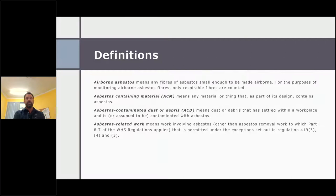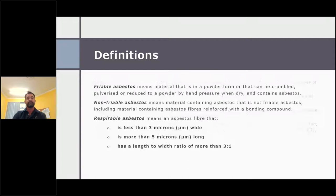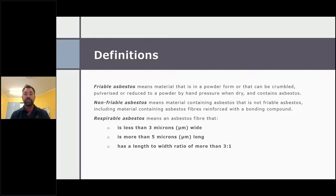Some definitions: Airborne asbestos is any fibre of asbestos small enough to be made airborne — for monitoring purposes we only count the respirable ones. Asbestos containing material is any material that as part of its design contains asbestos. Asbestos contaminated dust or debris means any dust or debris settled within a workplace that is or is assumed to be contaminated with asbestos. Asbestos related work means any work involving asbestos other than removal. Friable asbestos is any material in a powder form that can be crumbled or pulverised by hand pressure alone and contains asbestos. Non-friable asbestos is the bonded variety with a bonding compound. Respirable asbestos is any asbestos fibre less than three microns wide, more than five microns long, with a length to width ratio of more than three to one — which is what we look for when doing airborne monitoring.